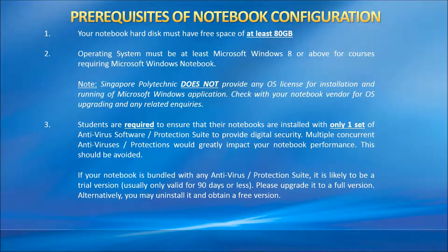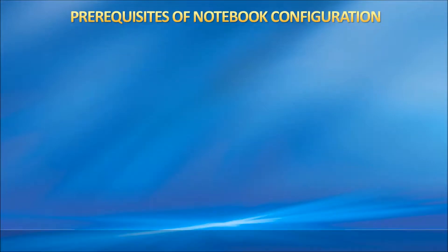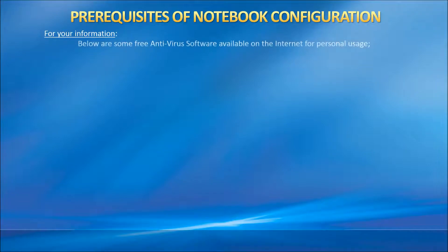If the antivirus software that comes with your notebook is a trial version, it is usually only valid for 90 days or less. Please obtain a full version, or uninstall it and obtain the free version. For your information, below are some free antivirus software available on the internet for home use.